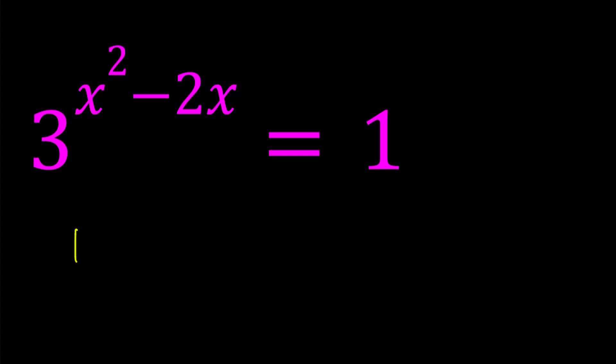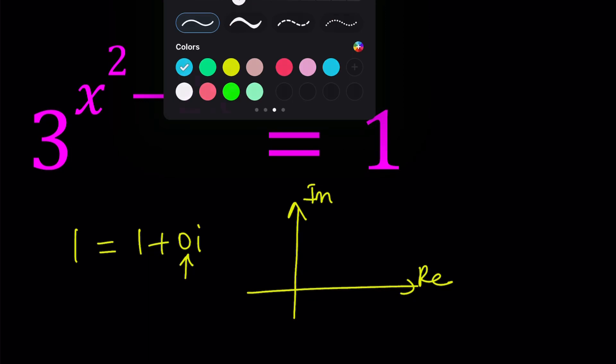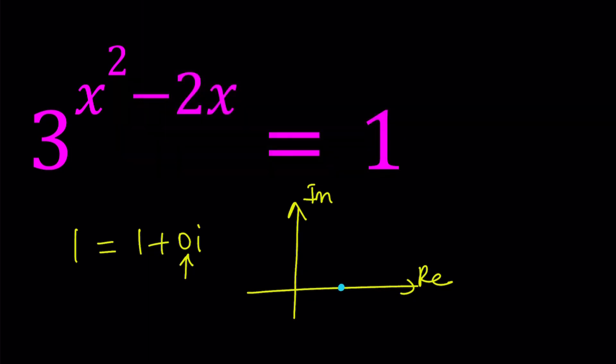1 can be written as 1 plus 0i, and on the coordinate system, this is the imaginary axis, this is the real axis. Notice that the imaginary part is 0, and the real part is 1, which means our number is actually going to appear on the x-axis, 1 unit from 0.